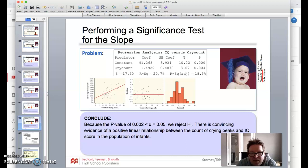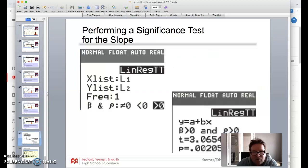All right, so conclude. Because the p-value is 0.002, which is less than our significance level of 0.05, we're going to reject the null hypothesis. We're going to say that there is convincing evidence of a positive linear relationship between the count of crying peaks and IQ score in the population of infants. And if you take a look at the screenshots from the calculator, we're going to see that linear regression T-test. Using list one and list two, frequencies one, notice the key here is we're going to do in our alternative hypothesis, we said it was greater than zero. And then when we do it, we get the output. It tells us what the t-score is, and then p is kind of the big thing we're looking for in that case.